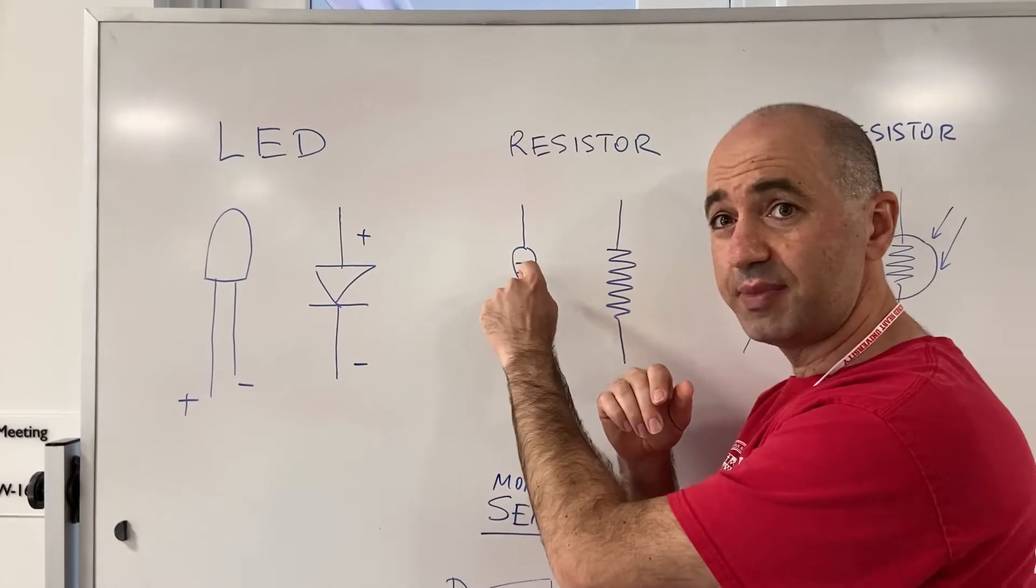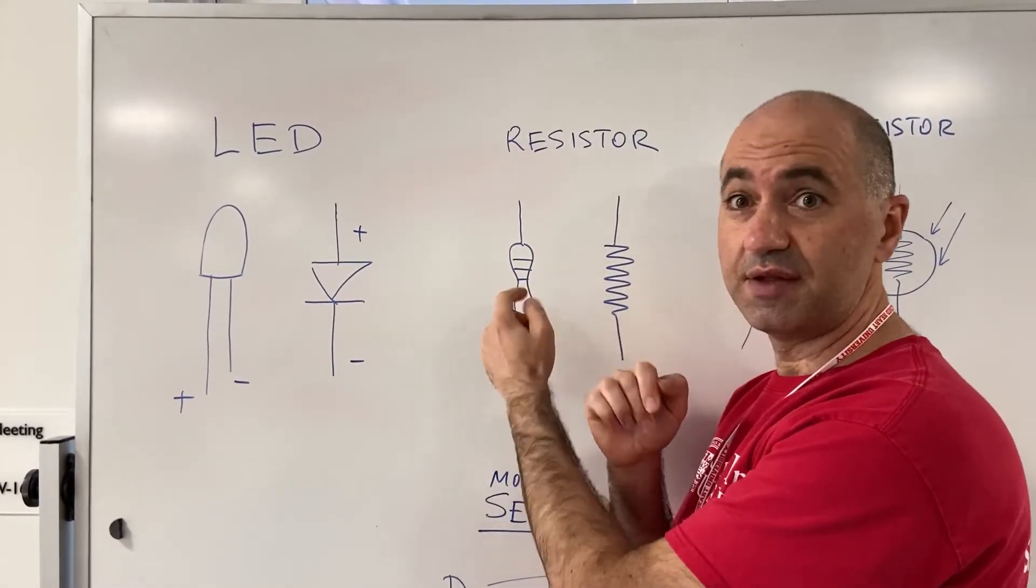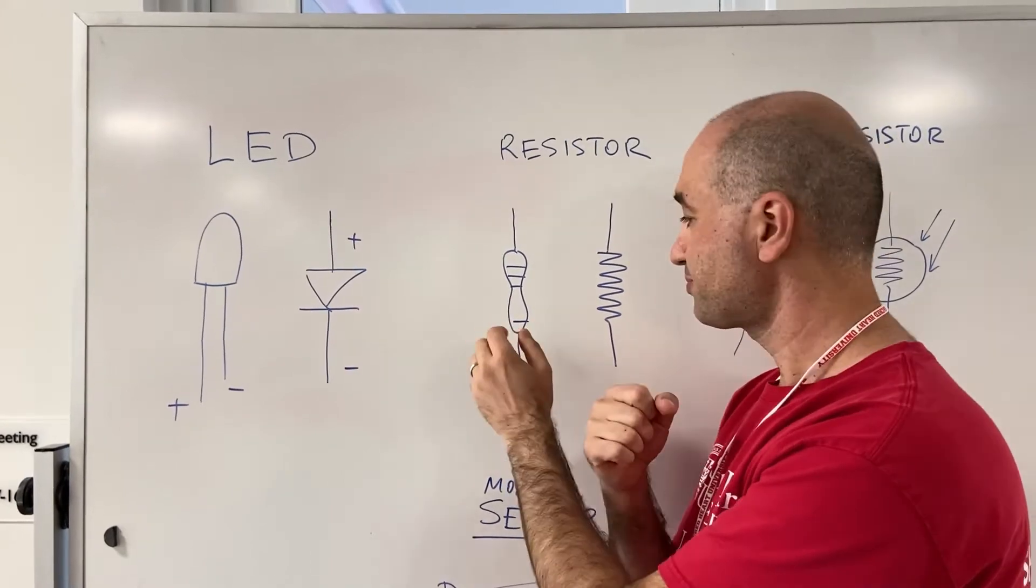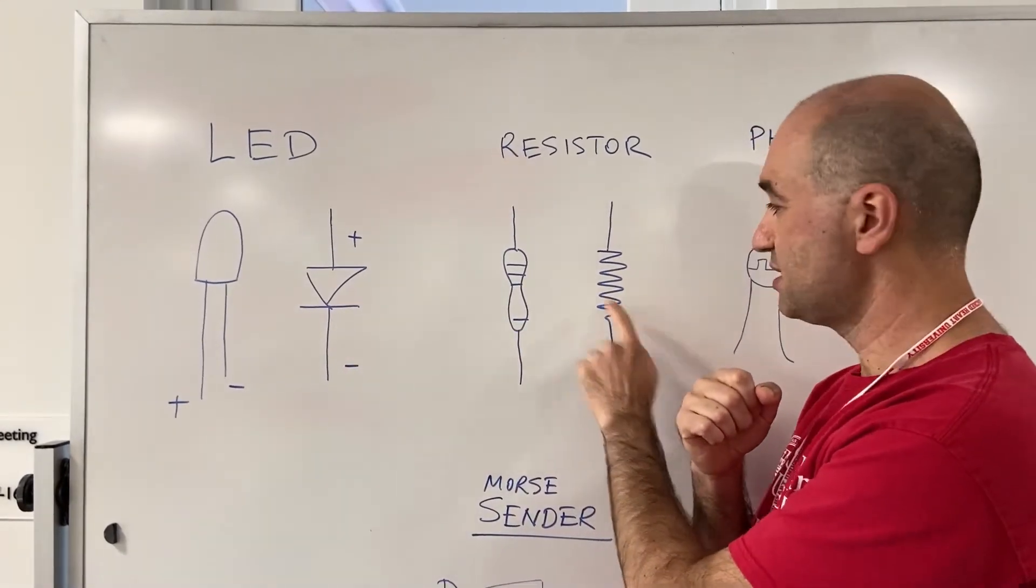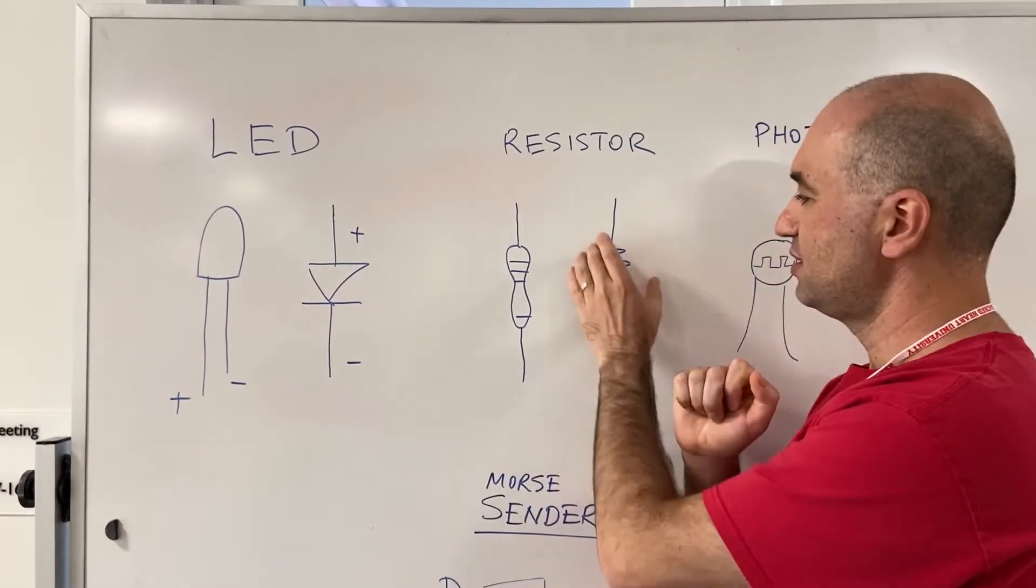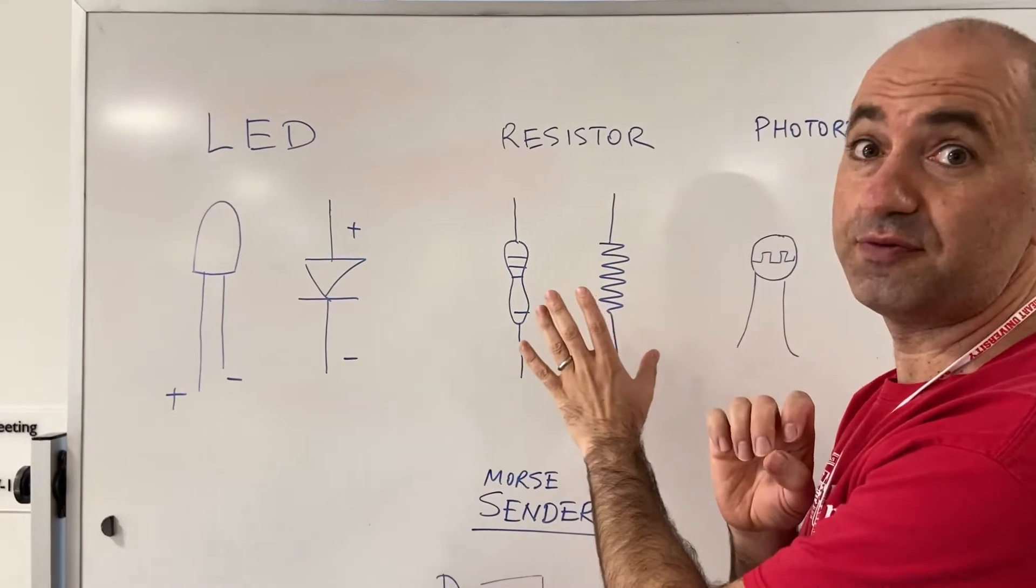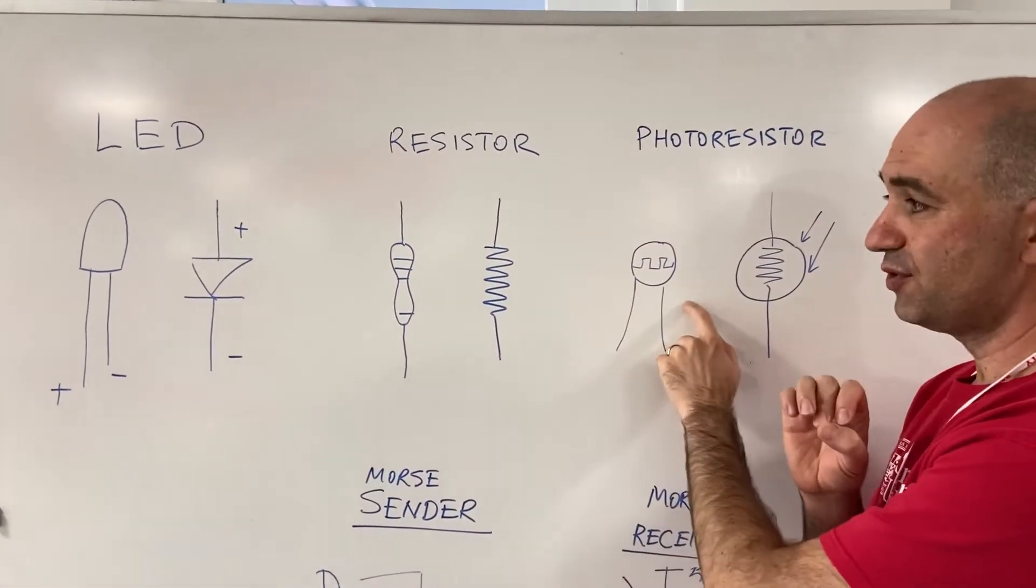This is how it looks like: you will see different color bands. You have it in your packet, some resistors with different colors that tell us what the value is. This is the circuit symbol - it's like a zigzag, almost like creating more resistance to it.